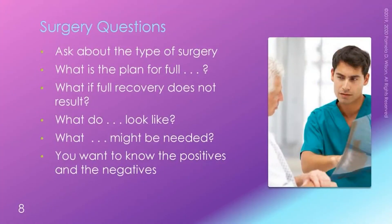Let's talk about surgery questions. We're going to use hip fractures as an example, but this line of questioning works for any type of surgery. The type of surgical treatment for a hip fracture varies by the type of fracture. If it's a hip fracture, you want to ask what type — is it a pin, or is it a full hip replacement? Then ask questions about recovery: what do we expect after the surgery?